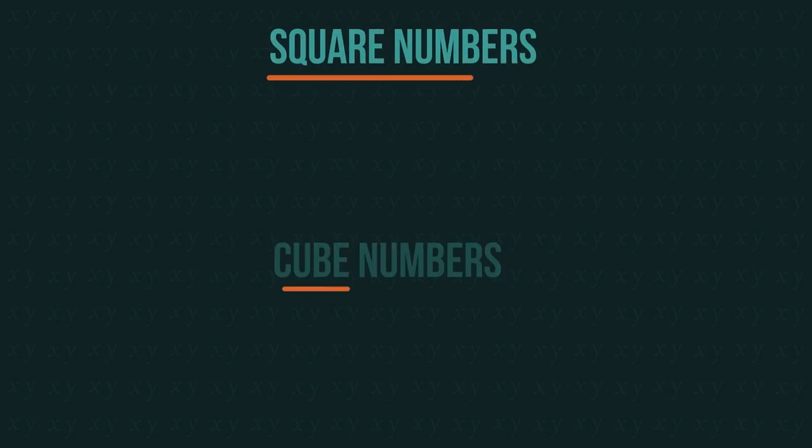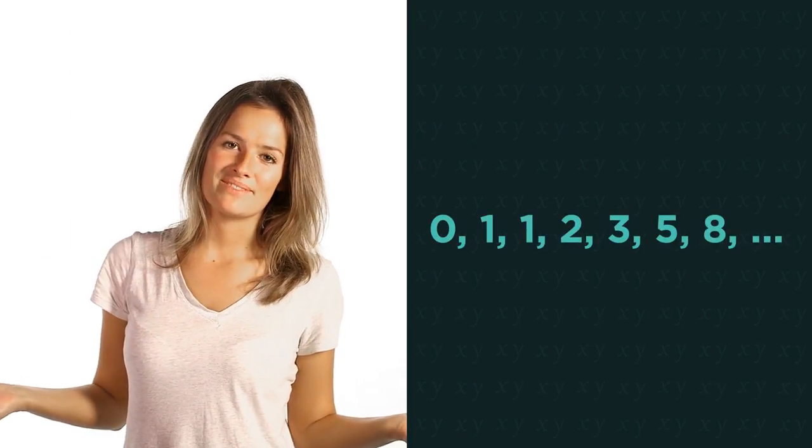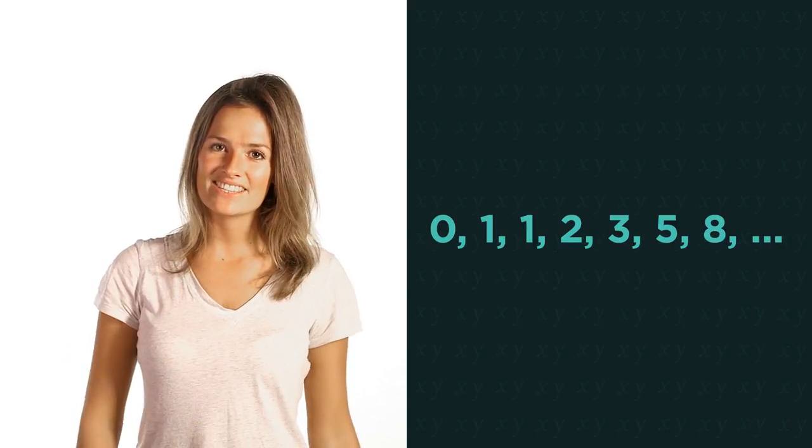Square numbers and cube numbers are also special sequences. But what about this special sequence? Can you find the next three terms? Did you get 13, 21 and 34?